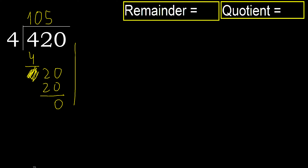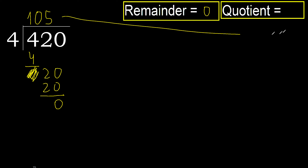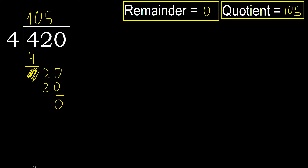Next. That is not a number, therefore finish it. Okay, 420 divided by 4 is here — the answer is shown.